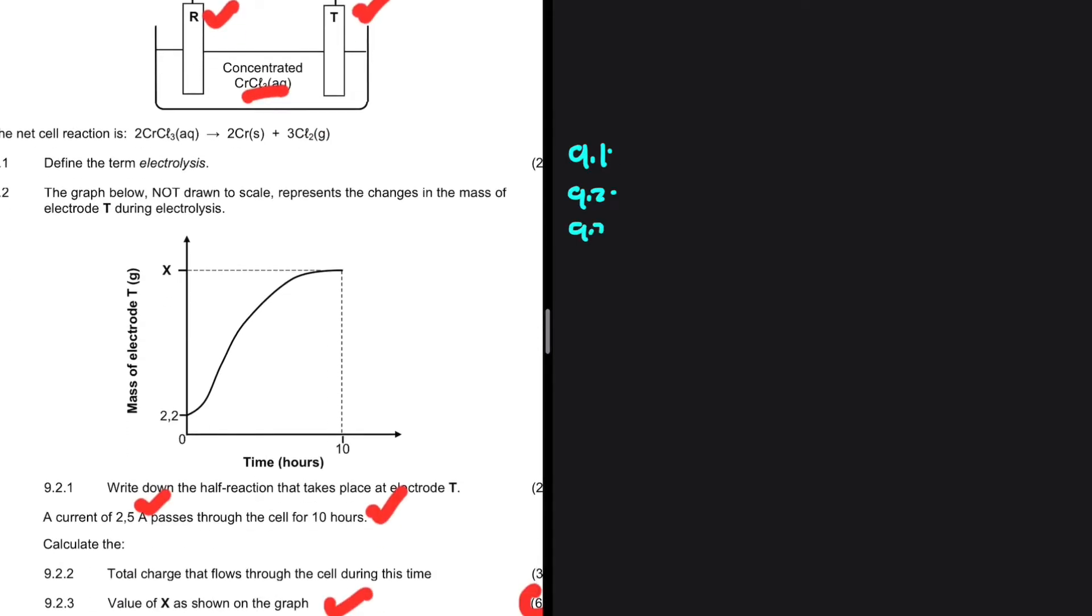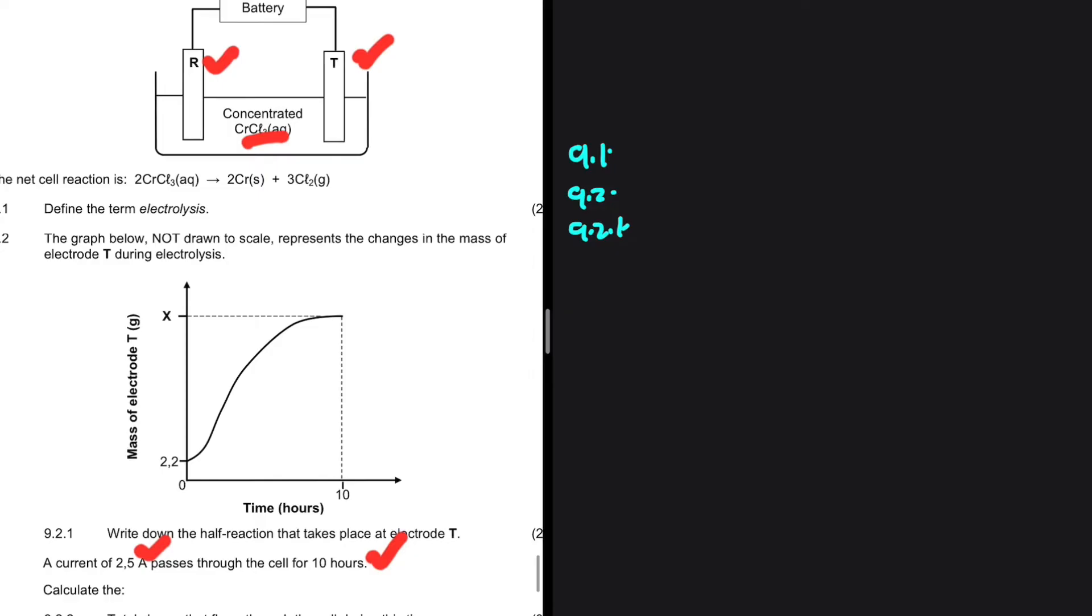The first question, 9.2.1, we're looking for the half reaction that takes place at electrode T. We have two electrodes, R and T. This is the mass. This graph is showing us the mass of the electrode T. As you can clearly see, the mass is increasing. And we know that the mass increases at the cathode. So, T is our cathode and R is our anode. This is true for both galvanic cells and electrolytic cells.